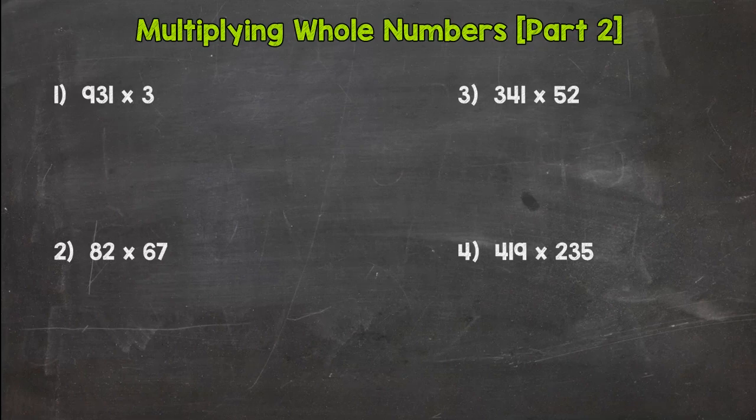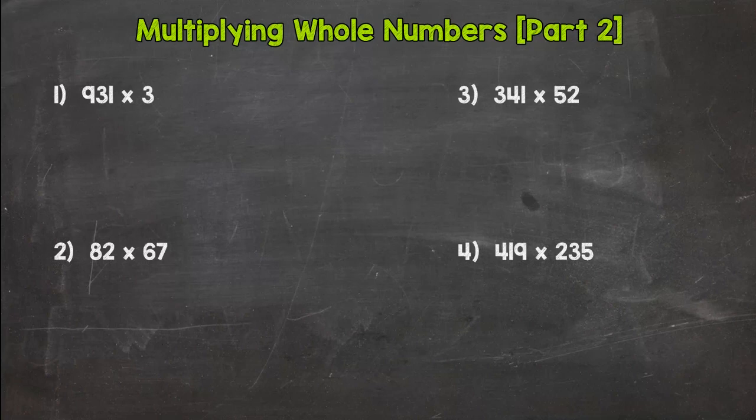We're gonna start with number 1 here. We have a 3-digit number by a 1-digit number, and as we go through we will increase in difficulty. Number 2 we have a 2 by 2, number 3 a 3 by 2, and then number 4 a 3 by 3.